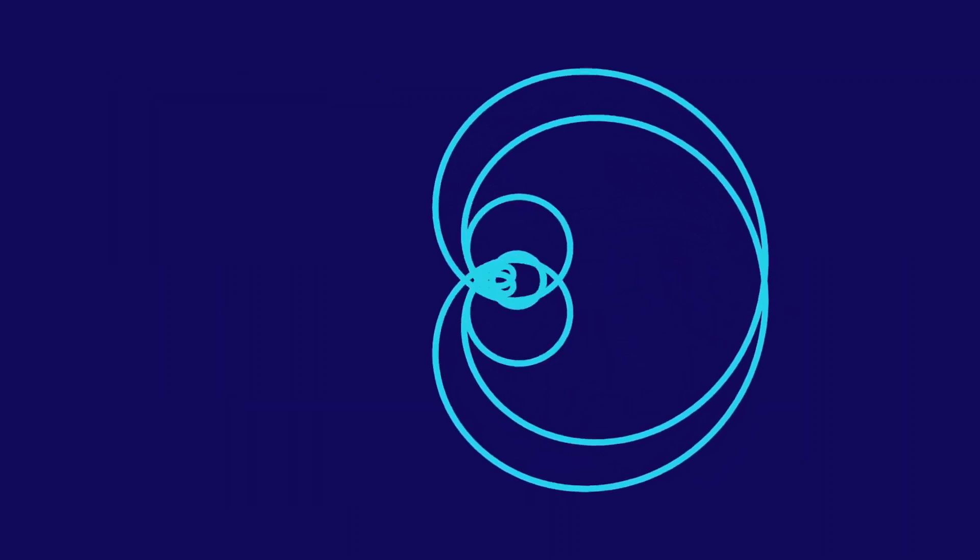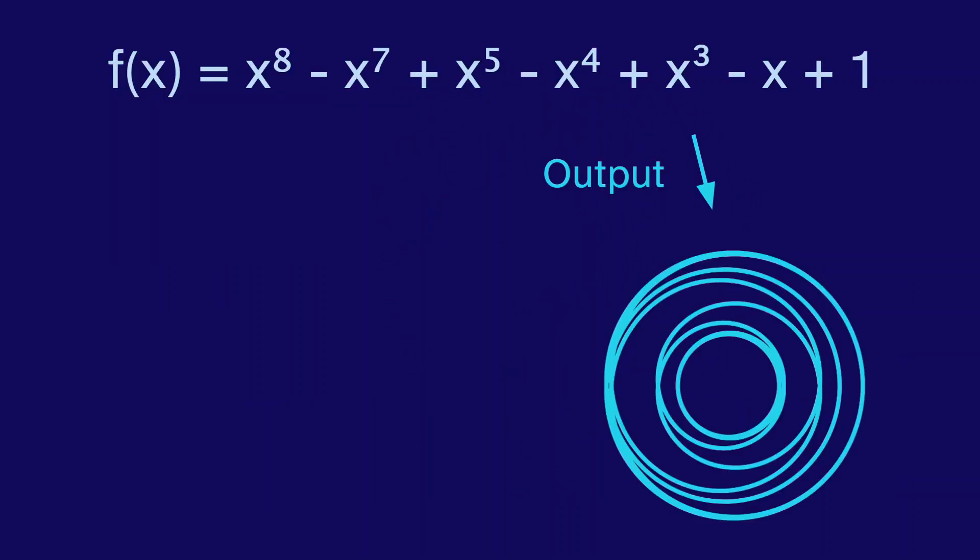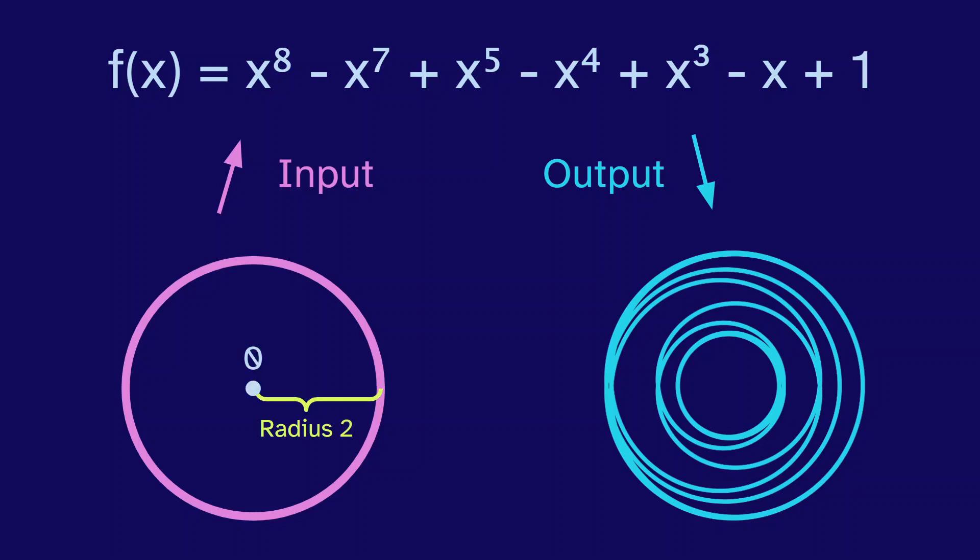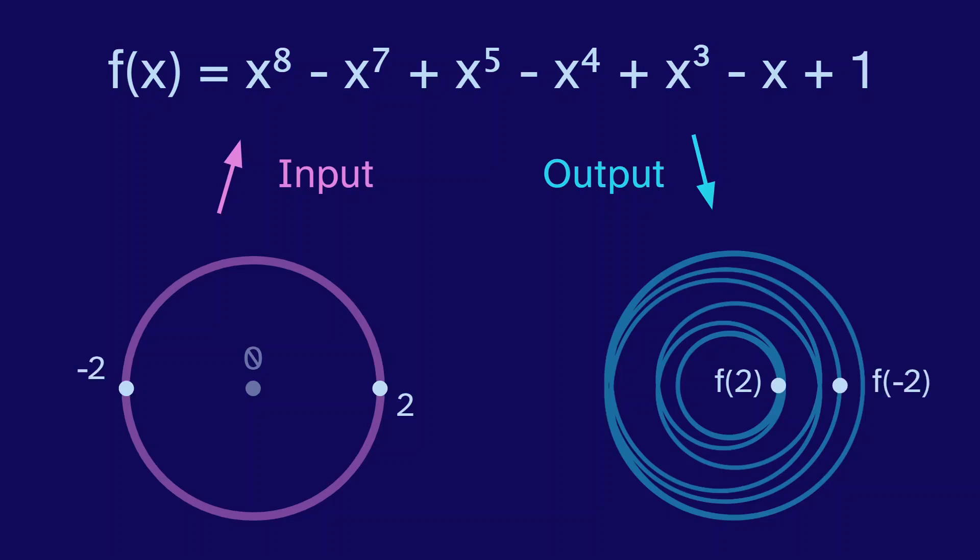One way is this animation. At each frame, we're showing the output of the polynomial with a circle as the input. For this frame in particular, we use the circle of radius 2. All of the complex numbers that are 2 away from 0. This includes 2, negative 2, 2i, negative 2i, and all the points in between.